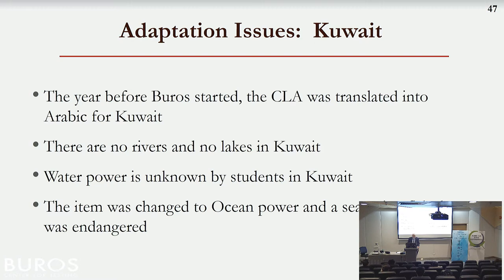Slovakia had almost no problems — it was a reasonably easy adaptation. They are a quasi-Western NATO country with both rivers and hydroelectric power. Kuwait, however, has no rivers, no lakes, and no hydroelectric power. Students who were interviewed had often never seen a river or a lake. They actually changed the scenario so that power was being obtained from the ocean, with an ocean-going fish as the endangered species. But it created a problem that just didn't fit that easily.